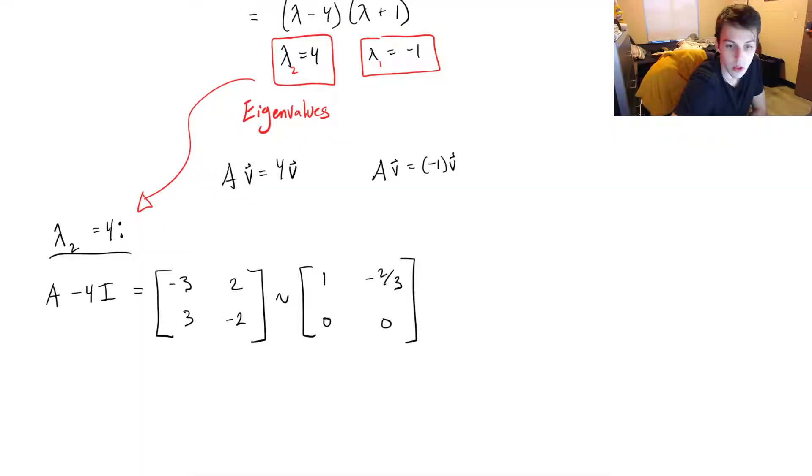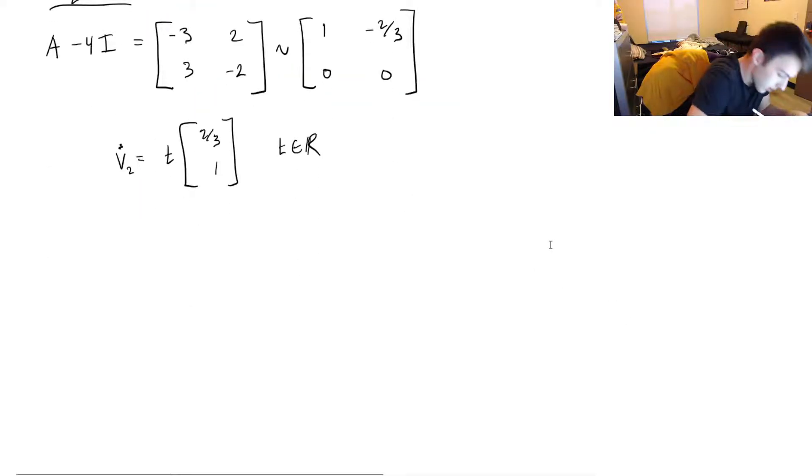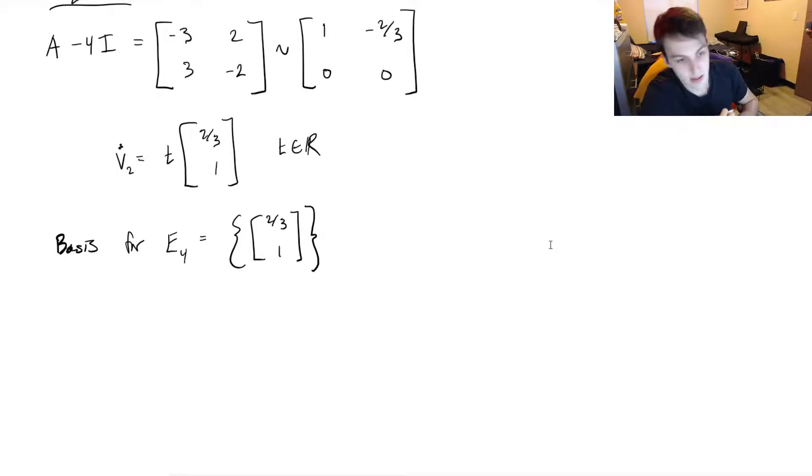And this is a homogeneous system. So reading the solutions off of our matrix, we know that our solution, let's just call this v₂, this would be t times [2/3, 1], where t is some constant. So we can say that the basis for the eigenspace that corresponds to λ equals 4 is that vector [2/3, 1]. Because that vector there will span the entire solution space.